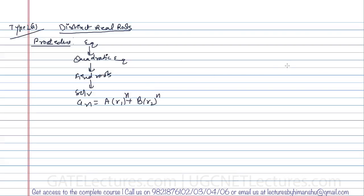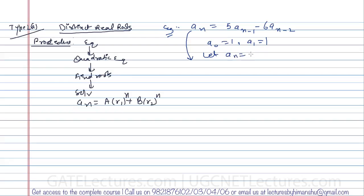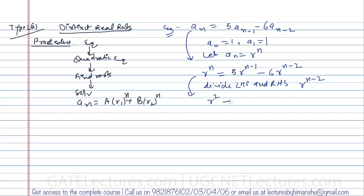Let us take an example. The equation is a_n = 5·a_{n-1} - 6·a_{n-2}, with a(0) = 1 and a(1) = 1. First, let a_n = r^n, so the equation becomes r^n = 5·r^{n-1} - 6·r^{n-2}. Divide both sides by r^{n-2}, giving r² = 5r - 6.